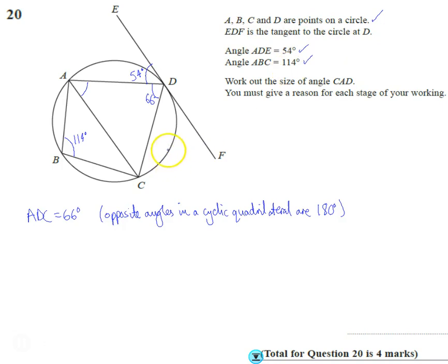What I worked out next was I spotted that these three angles make a straight line, because this is a tangent. I worked out that angle CDF was 180 minus 66 minus 54, which comes out as exactly 60 degrees. The reason I knew that—and you've got to write this down as well—is angles on a straight line equal 180 degrees. So I know that this here is 60 degrees. I've used this as a straight line, but I've not used it as a tangent yet.